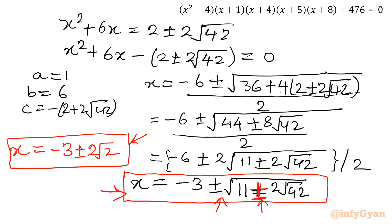So there are 6 solutions in total: 2 from t = -1, and 4 from the quadratic t² - 4t - 164 = 0, giving us -3 ± 2√2 and -3 ± √(11 ± 2√42). This is how we can find all 6 solutions of this hexic equation using synthetic division, quadratic equations, and algebraic manipulation. I hope you liked this video. Thank you so much for watching. Do not forget to like, share and subscribe. Bye-bye till next video.